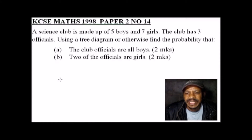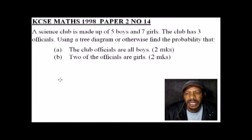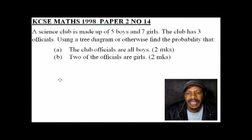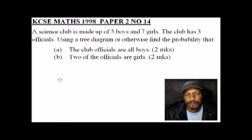This question was tested in the 1998 paper 2, number 14. It says: a science club is made up of five boys and seven girls. The club has three officials. Using a tree diagram or otherwise, find the probability that: (a) the club officials are all boys — two marks; (b) two of the officials are girls — two marks.